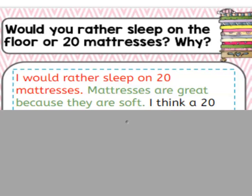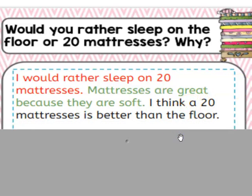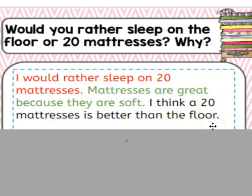To get the closing sentence, you want to make sure that you just finish your thoughts. You can use an opinion starter like 'I think 20 mattresses is better than the floor.' You're just telling me that you think it's better than the other choice. Remember, in the closing sentence you do not need to introduce any more reasons — you just need to wrap up your idea.